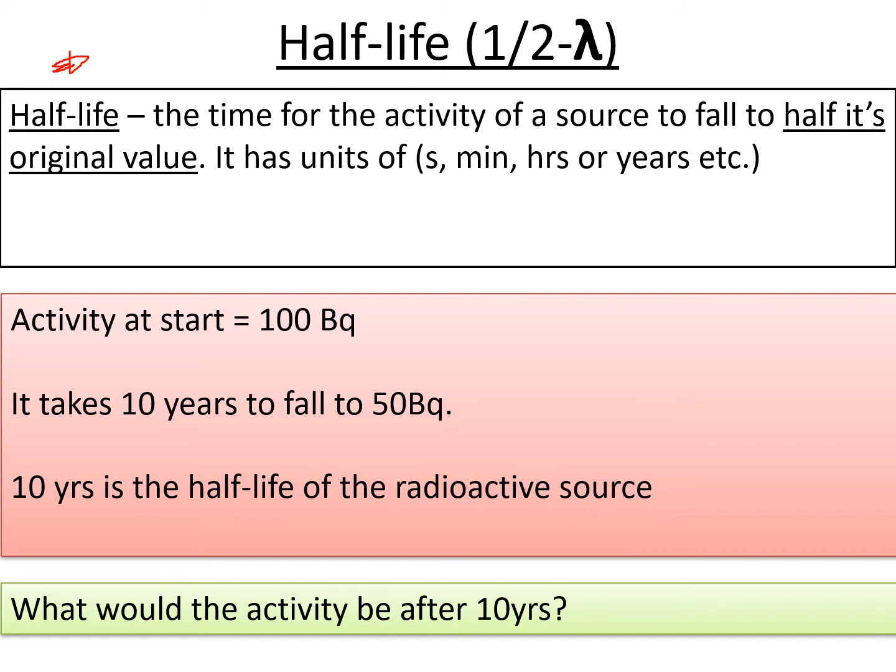After another 10 years it would be 25 becquerels. What you're doing every half-life is dividing your activity by half. If you think about that carefully, it means technically your radioactive source is always going to be radioactive because you could keep dividing by half until it gets really small.